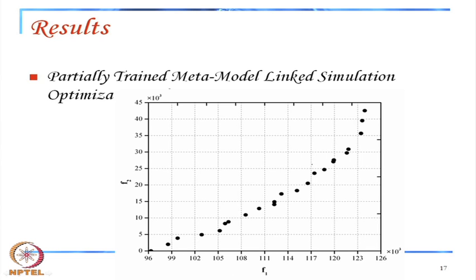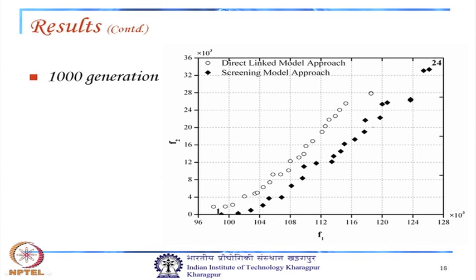A screening model approach can also be used: run optimization with the metamodel to get an intermediate Pareto front, then pass those solutions to a final optimization where the original simulation model (FEFLOW) is linked. With 100 and 1000 generations, results show that the direct linked simulation approach gives the best result (closest to the true Pareto front), while the screening model approach provides a good approximation with reduced computation.